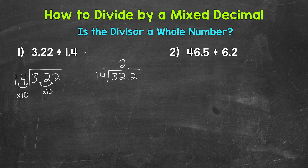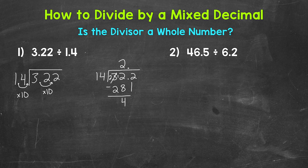Now multiply: 2 times 14 is 28. Subtract: 32 minus 28 equals 4 — we need to borrow: 12 minus 8 is 4, and 2 minus 2 is 0. Then we bring down, which gives us 42, and we repeat.